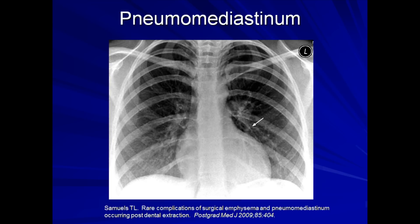Here is the more subtle pneumomediastinum. If you look very closely, you can see an outline of hyperlucency adjacent to the right mediastinal border. The extension of the hyperlucency being adjacent to both heart borders is suggestive that this patient has also developed pneumopericardium. These conditions can be surprisingly asymptomatic or lead to chest pain. Hypotension can theoretically complicate pneumopericardium, though I have personally never seen this occur.